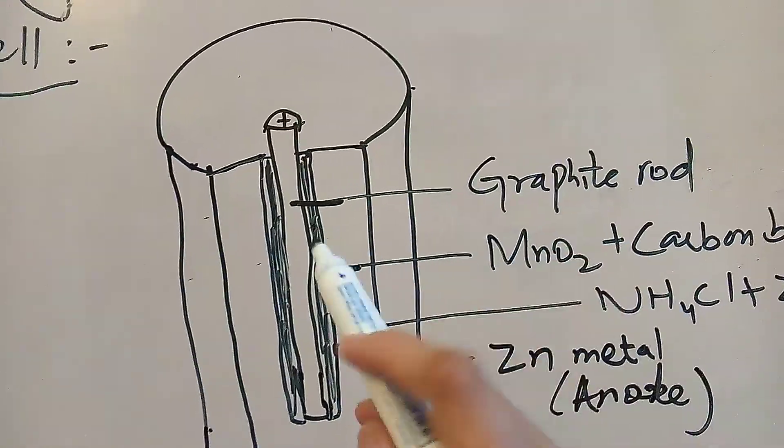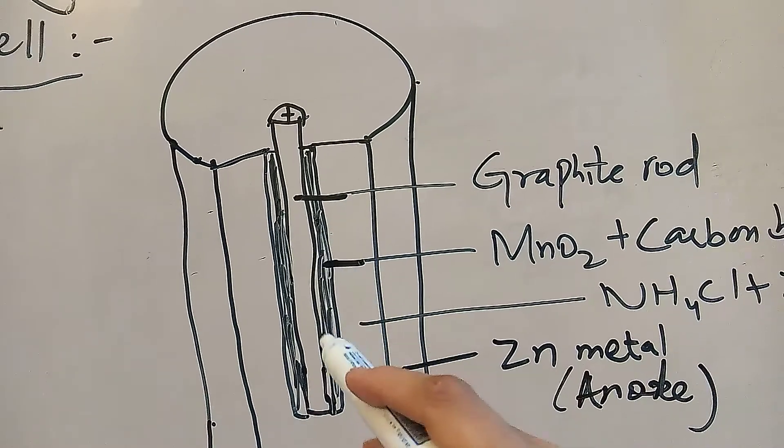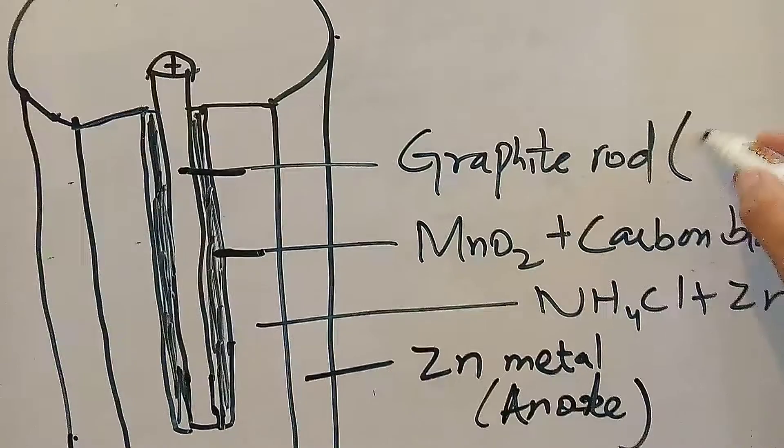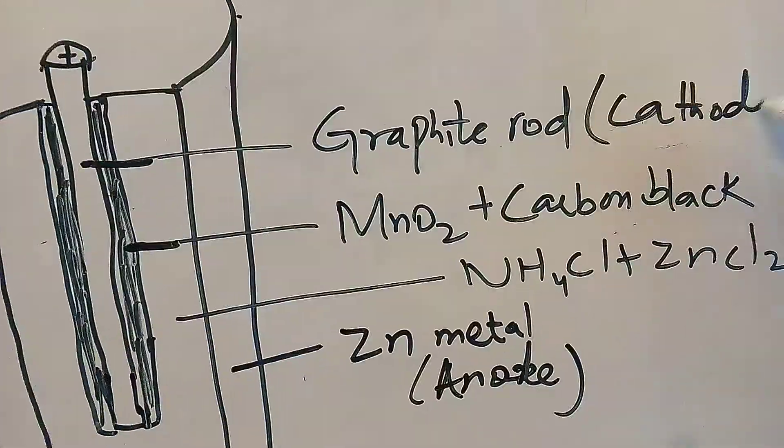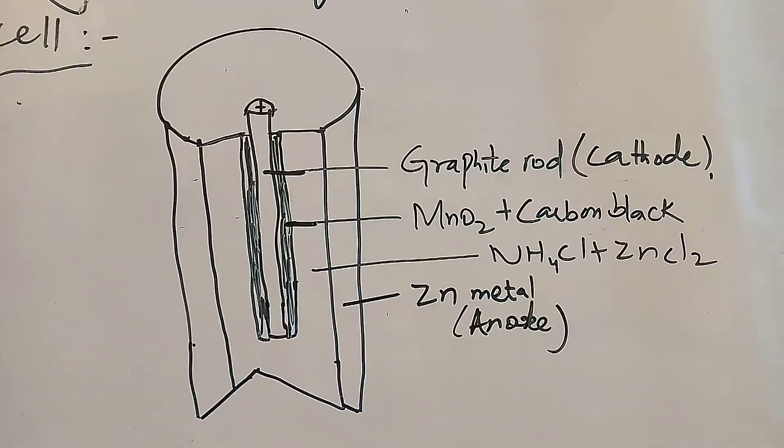In the center there is a graphite rod. Graphite rod is present in the center and this graphite rod will act as cathode. Graphite rod acts as cathode but the zinc metal acts as anode.